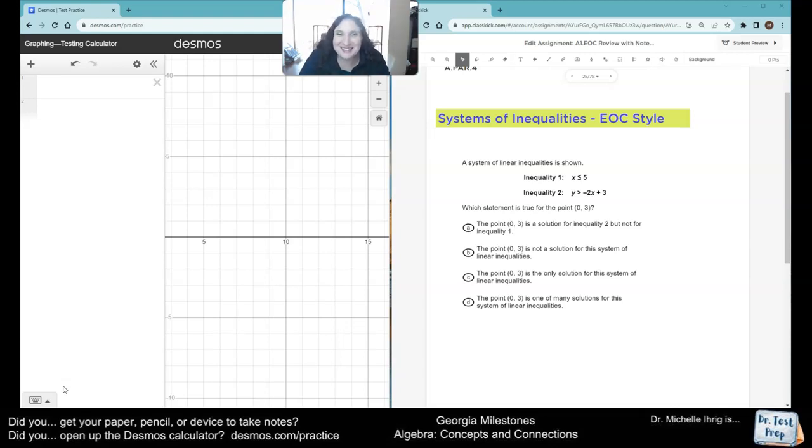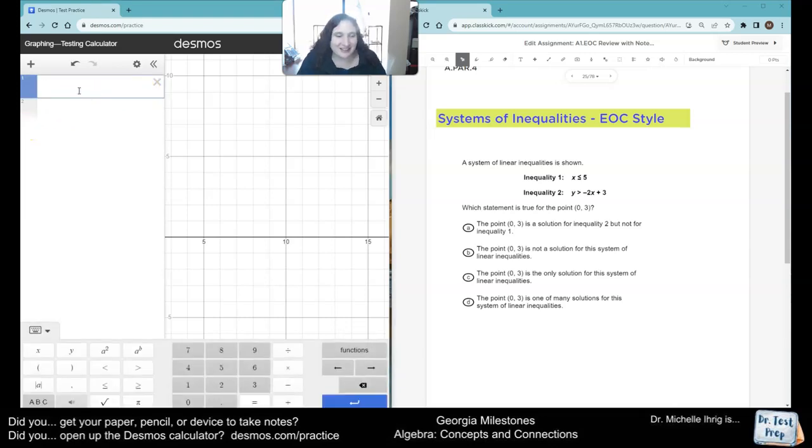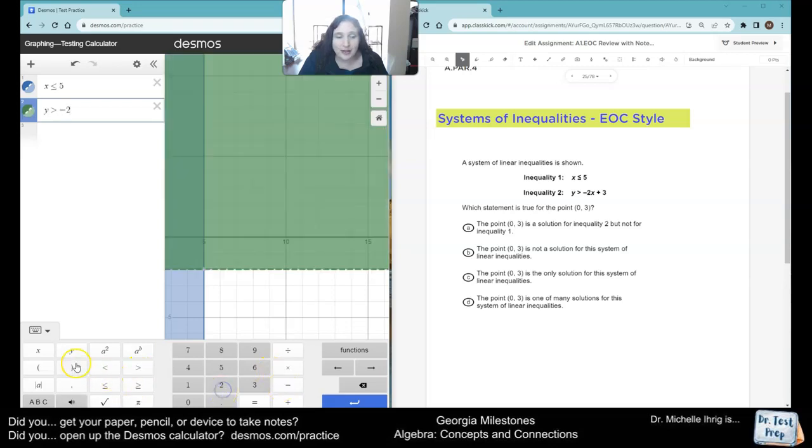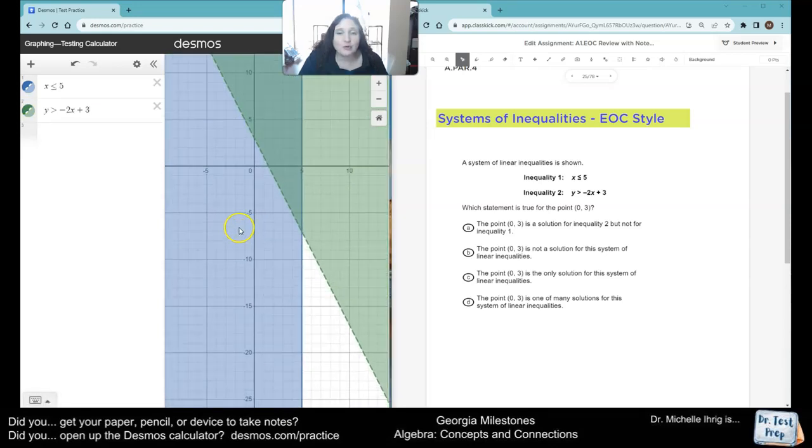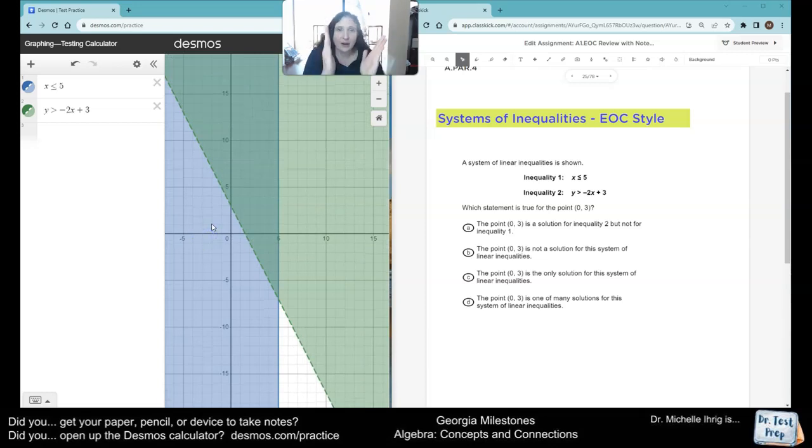It already tells you the inequalities. So all you need to do is go into the graphing calculator and type it out. We've got x is less than or equal to 5. Just make sure the images match the picture. And then we've got y is greater than negative 2x plus 3. And what we're doing is we are looking for our overlap. That's what we want.